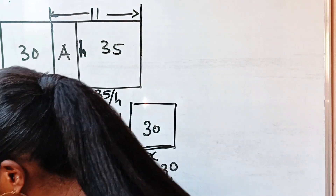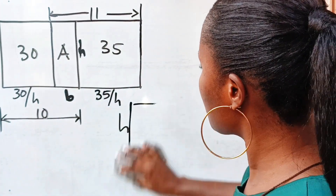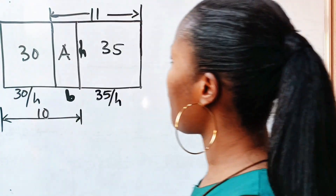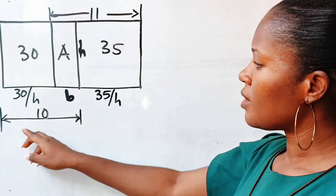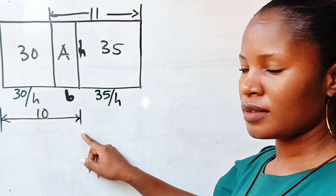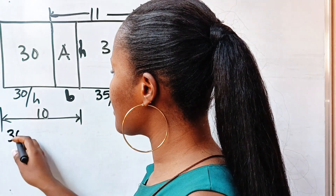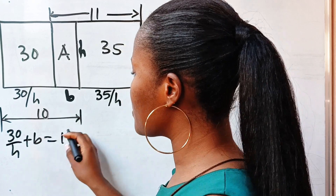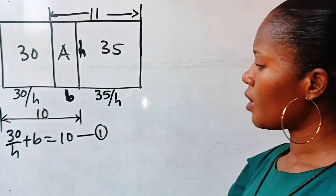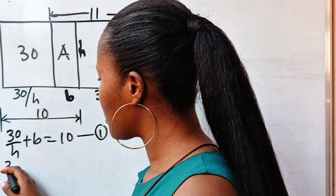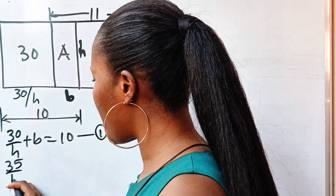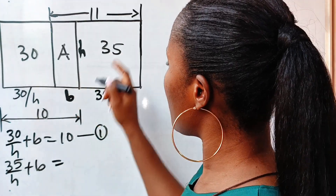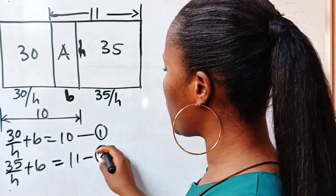Now let us get an equation to that effect. Since from here to here is 10, that simply means that 30 over h plus b is equal to 10 — let's call this equation 1. Similarly, 35 over h plus b is equal to 11 — let's call this equation 2.